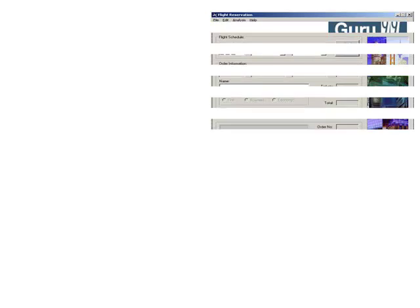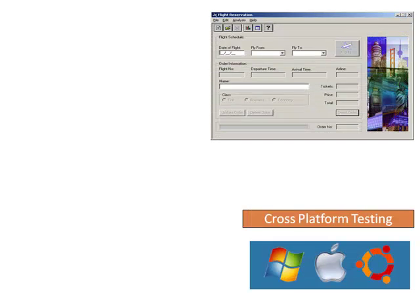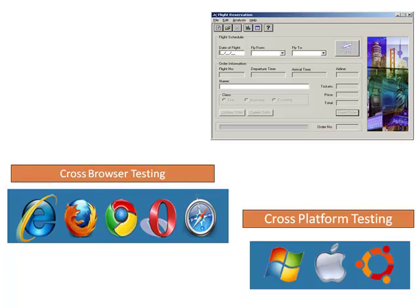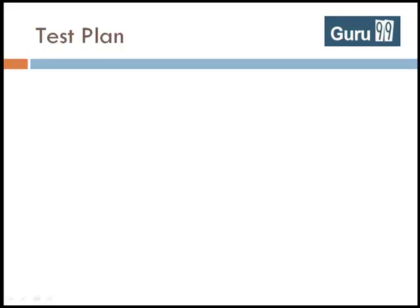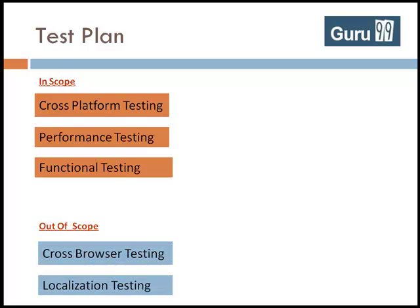For the Flight Reservation Application, you might want to test the application to examine how it works when installed on different operating systems. But testing it to check how it works for different browsers does not make sense, since it is not a web-based application. Based on this contextual analysis, you can make a list of testing types that are in scope and will be tested, and testing types that are out of scope and will not be executed for Flight Reservation.